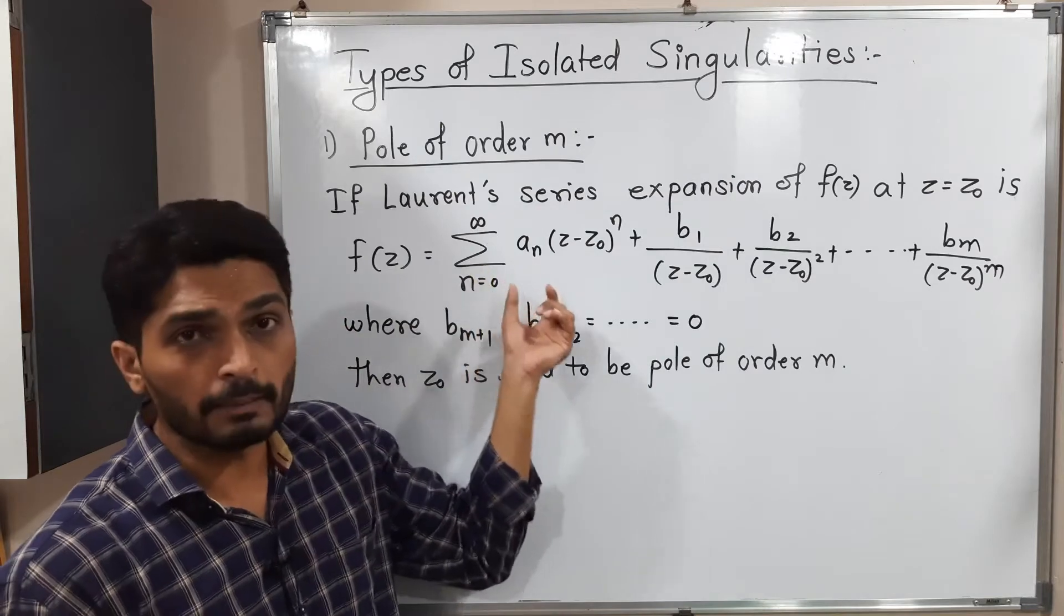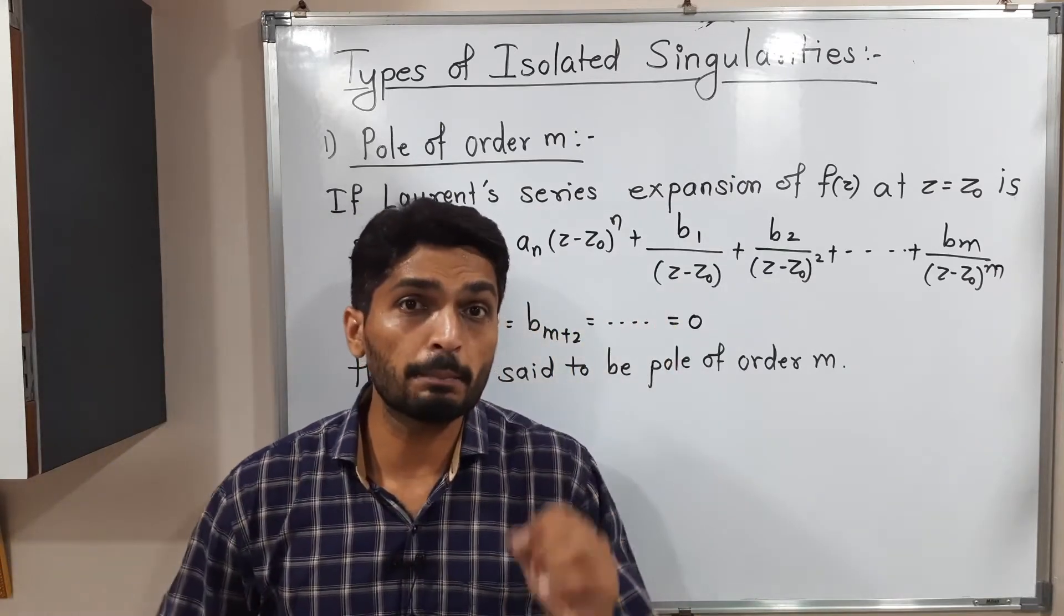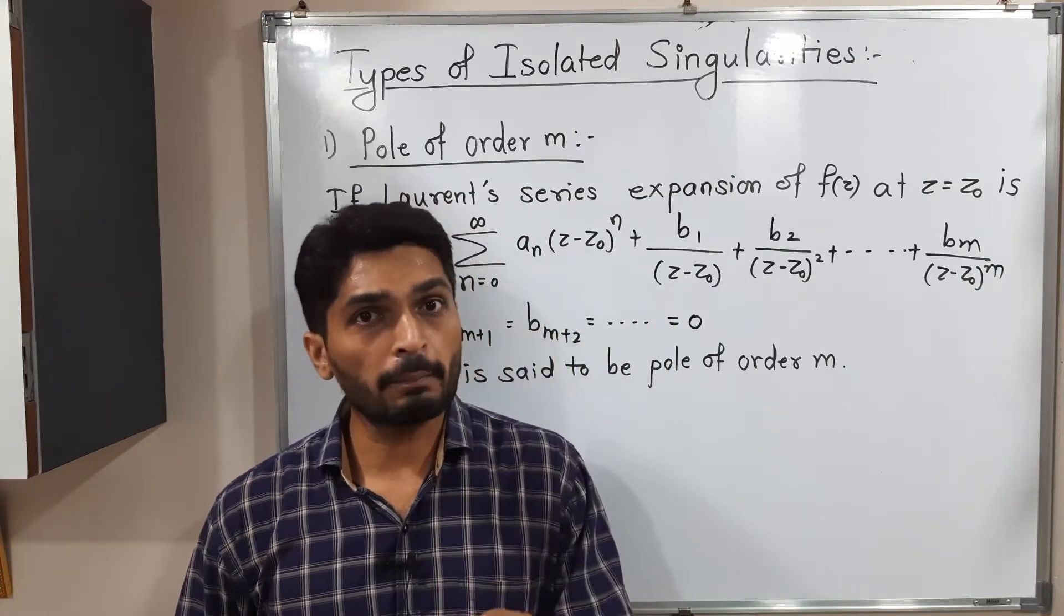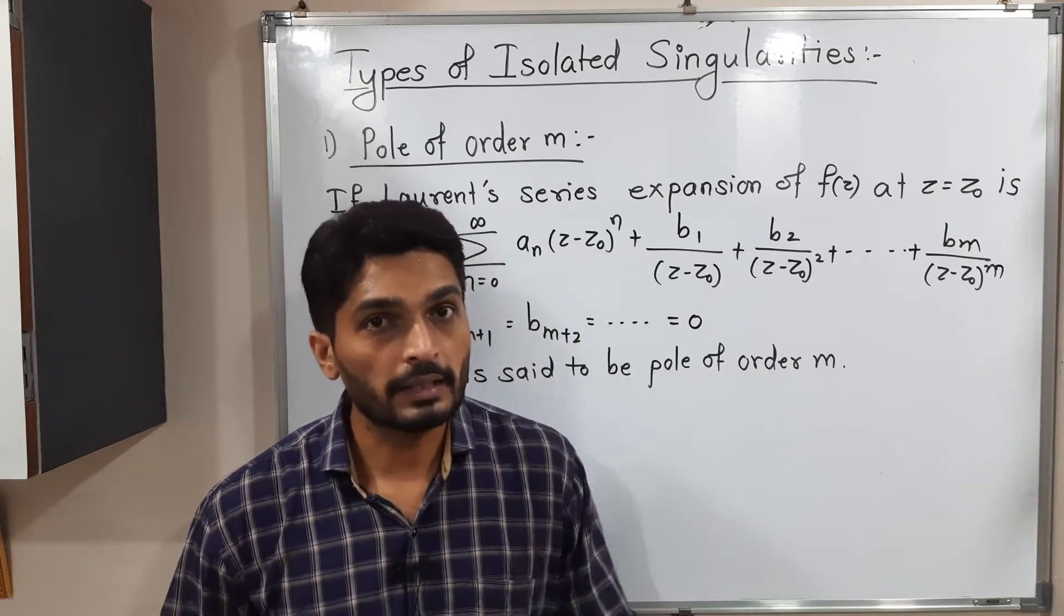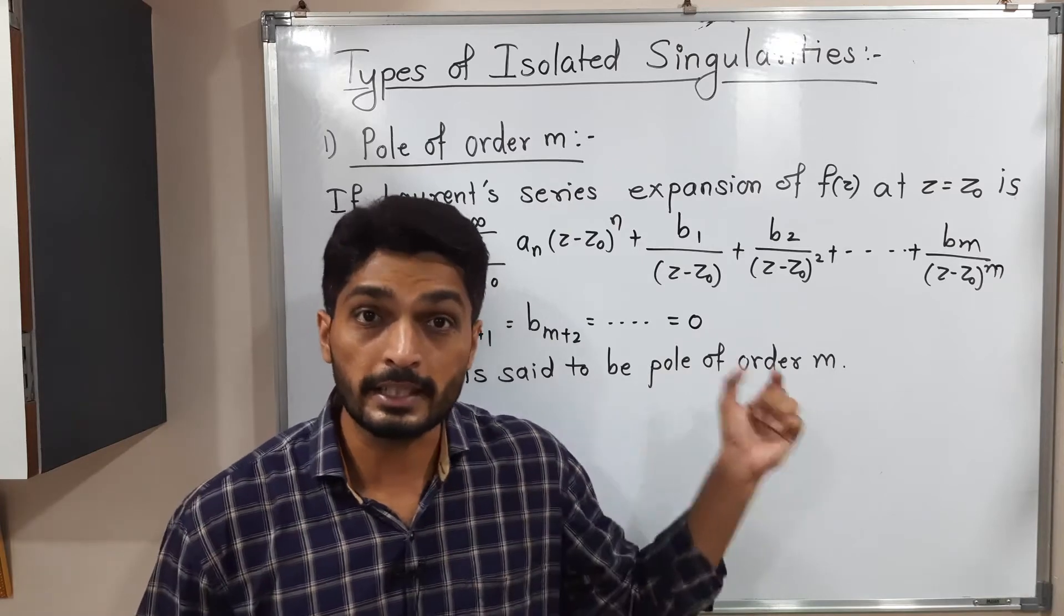The first part, we call it the analytic part, and the second part, we call it the principal part. In the analytic part, the bracket (z - z0) lies in the numerator. In the principal part, that bracket (z - z0) lies in the denominator.